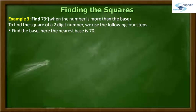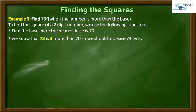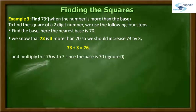Coming to step number 2, if you observe, the number 73 is 3 more than the base 70. So what we have to do here is we have to increase the given number 73 by 3. So 73 plus 3, you will get the sum 76. And now, by ignoring the number 0 in the base 70, we have to multiply 76 with 7.